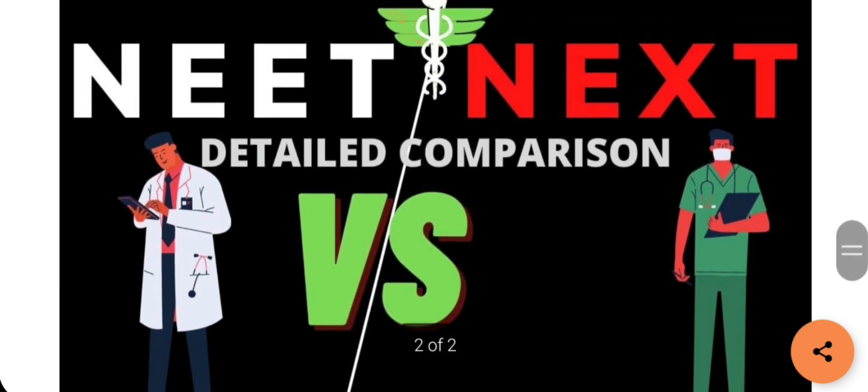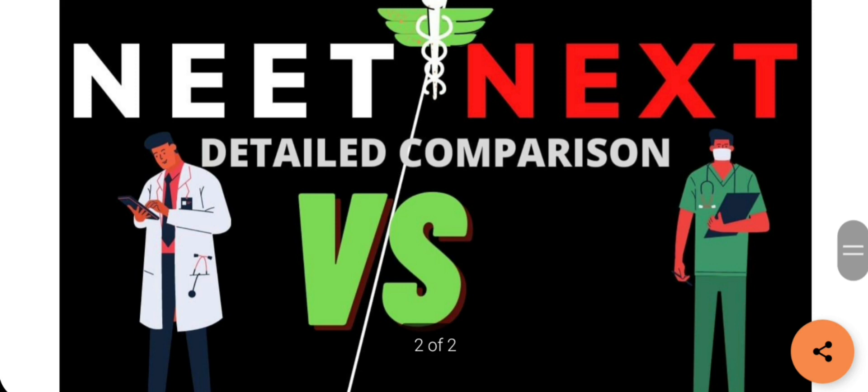NEET PG will be written after you complete your CRRI, but the NEXT exam will be written before that. Ranking for PG will be made based on your NEXT 1, which is written when you complete your fourth year. NEXT 2 will be written after completion of CRRI, and this will be the eligibility license you obtain after completing your MBBS exam.